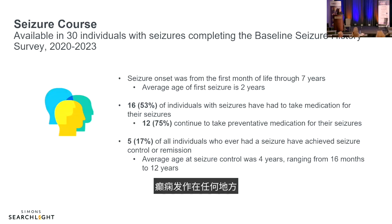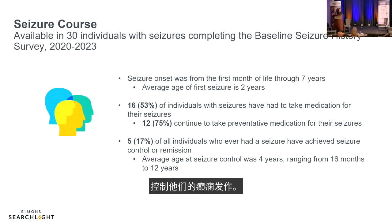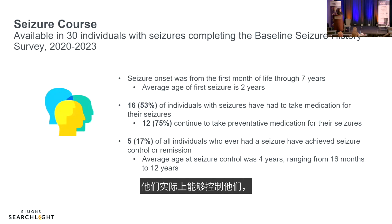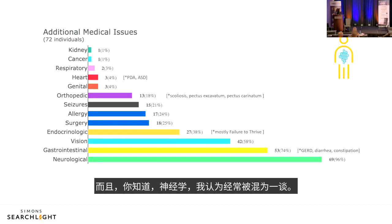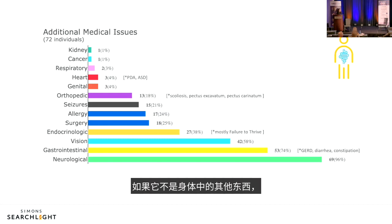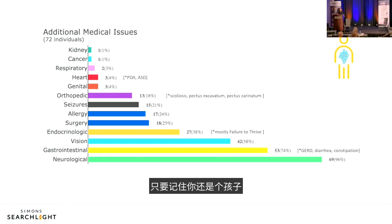Among the 30 individuals who provided seizure information: onset ranged from the first month of life to 7 years, with an average age at first seizure of 2 years. About half required medication to control seizures, and about three-quarters continue on seizure medication. About 17% — five individuals — achieved seizure control, typically taking around four years. Vision problems such as strabismus are also common.